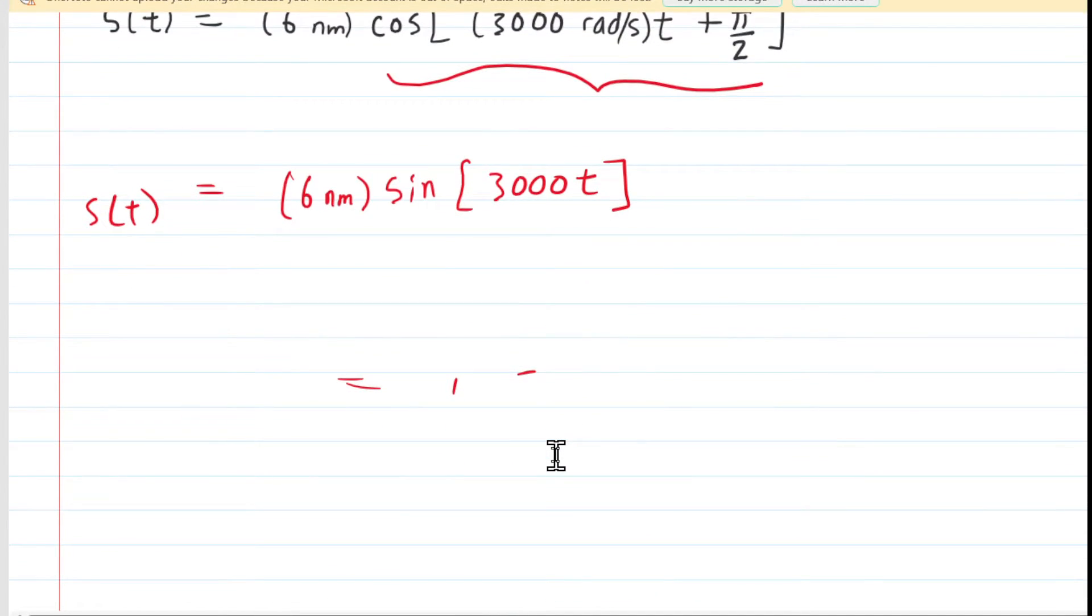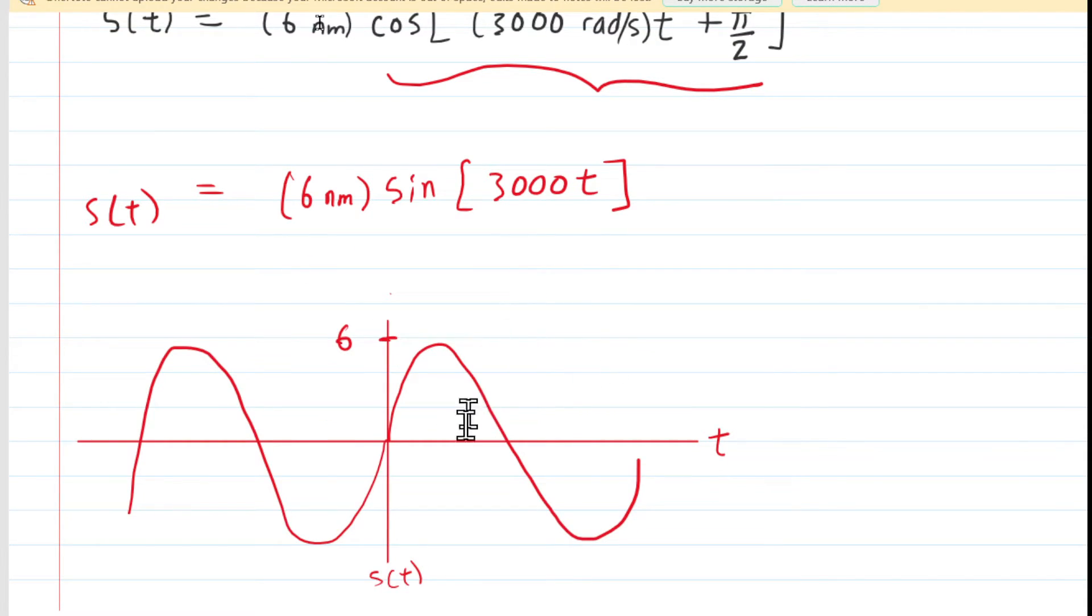And now it might be worth drawing a picture, a kind of rudimentary picture of the graph of this function to get a feel for what we're trying to solve for. So here's the graph of this sine function. It's passing through the origin. It's got an amplitude of 6 nanometers, and we're trying to figure out the time between the two particular positions.